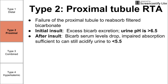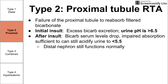Over time, the bicarbonate serum levels drop, everything stabilizes, and we reach a steady state where the impaired absorption is again sufficient to acidify the urine back to a more normal level of about 5.5 or lower. The distal nephron, after this insult, can still function normally and can still acidify the urine.